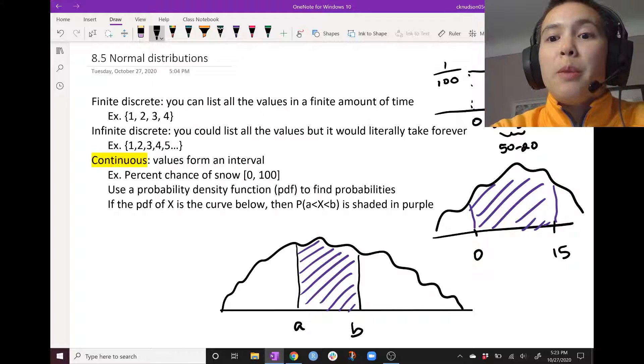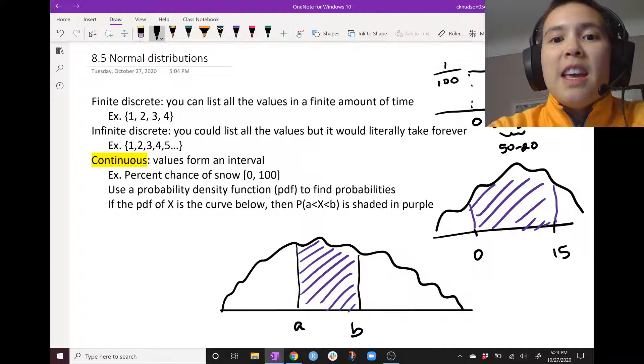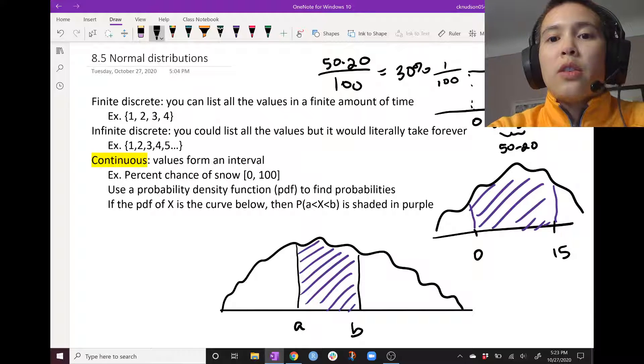And it has height 1 over 100. So the probability that we'd have a probability of between 20 and 50% chance of snow is 50 minus 20 over 100. Or in other words, 30%.